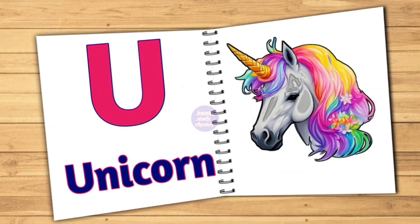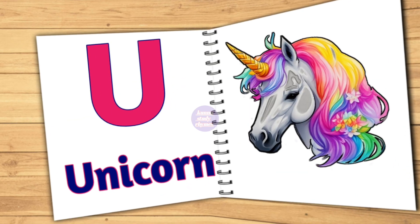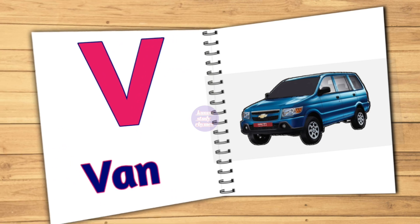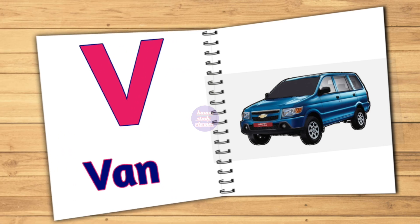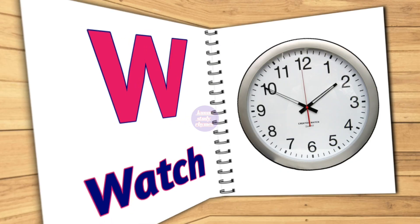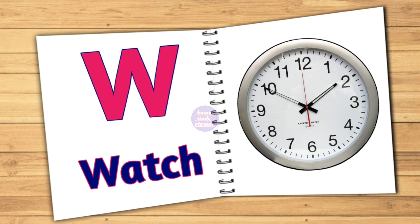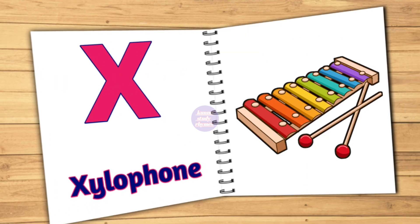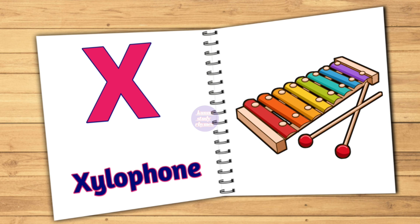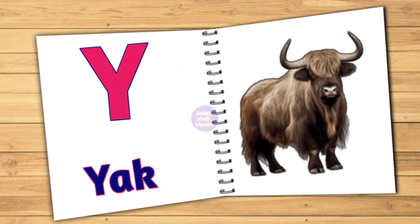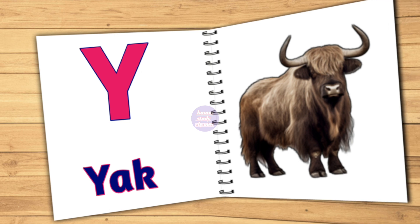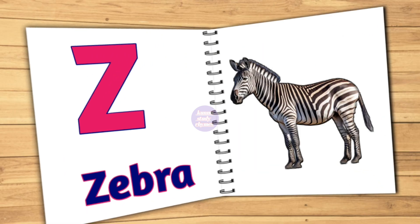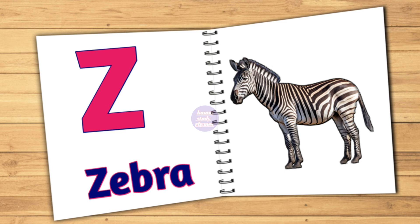U. U for Unicorn. V. V for Van. W. W for Watch. Y for Yacht. Z. Z for Zebra.